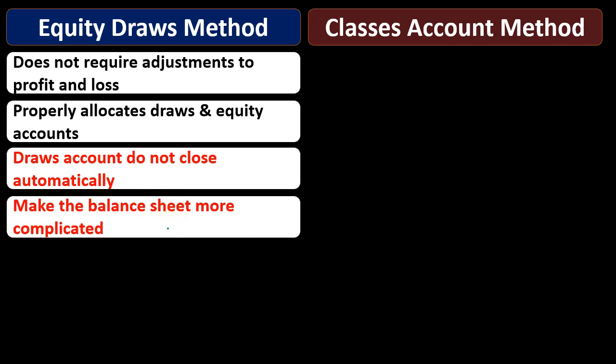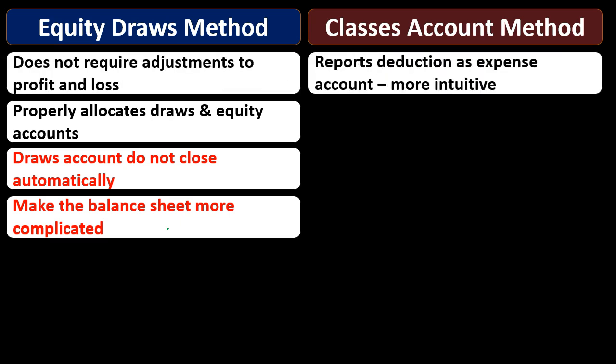Another drawback is that it makes the balance sheet account more complicated. We're going to add draws accounts to the balance sheet, so the equity section is going to grow from one or three items to all these draws accounts. That adds a level of complexity to the balance sheet on the permanent side of the reports, which is a bit of a drawback on the equity method.